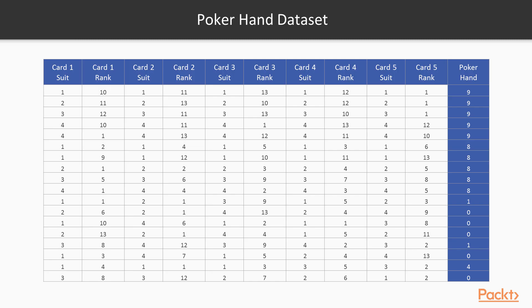Those files look something like this. Basically, for each card we are having suit and rank. As you can see, for card 1, card 2, card 3, card 4, and card 5, we are having the suit and the rank feature. And finally, we are having a poker hand result in the final column.